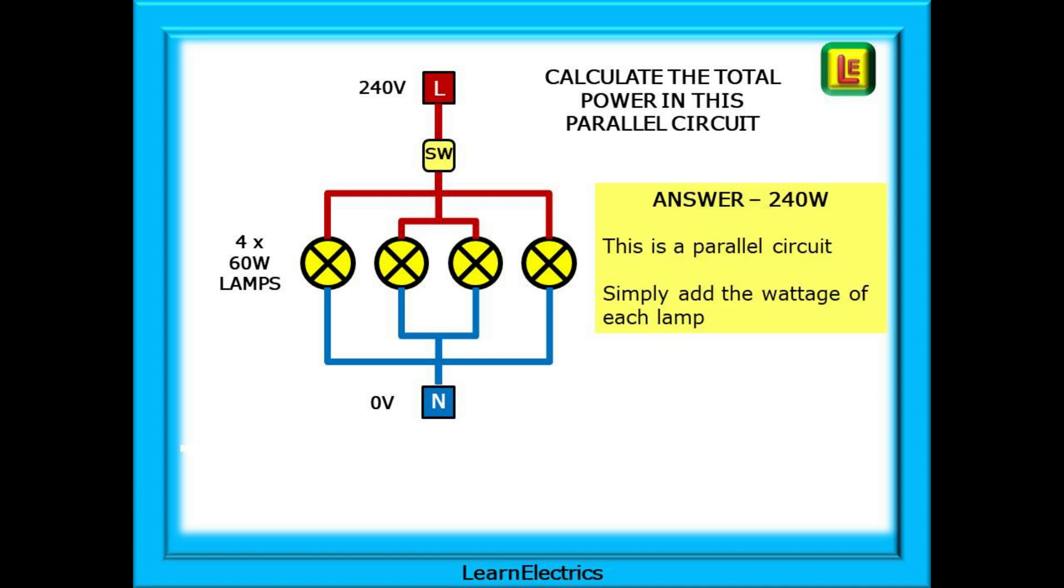The answer you have should be 240 watts. You can make the calculations if you wish, but as this is a parallel circuit and because we already know the power of each lamp, we can simply add all the wattages together. Four times 60 watts is 240 watts.